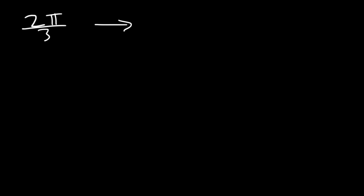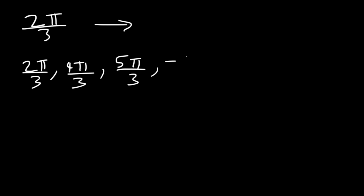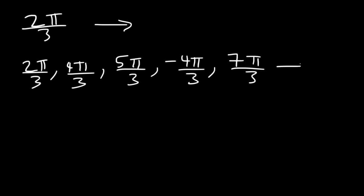Now what if we wanted to find the reference angle of an angle in radians? So what is the reference angle of 2π/3? There's a nice trick that works for common angles on the unit circle, like 4π/3, 5π/6, or 7π/4. Angles like 2π/3, 4π/3, 5π/3, negative 4π/3, or even 7π/3 all share the same reference angle of π/3.